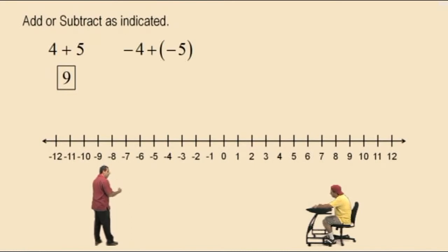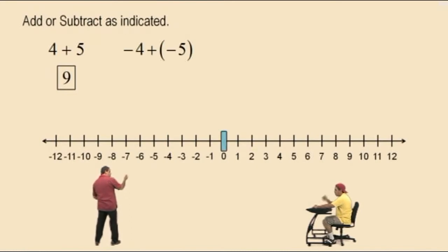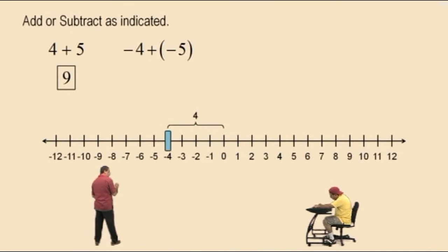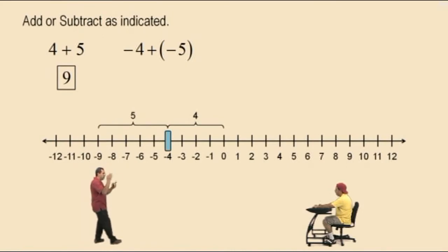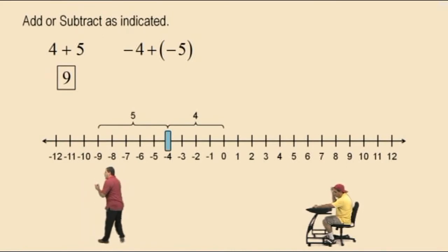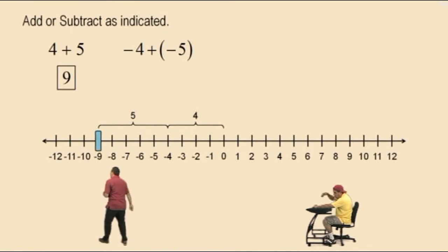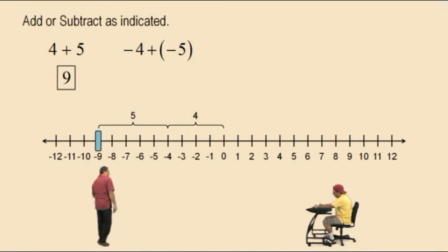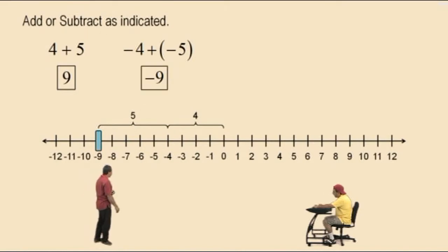Here's negative 4 plus a negative 5. So to enter a negative 4, we've got to move 4 units to the left. And now we're going to add a negative 5. Addition means move to the right, but when you add a negative number, it forces you to the left, and we've got to move 5 more units, and we do get negative 9.